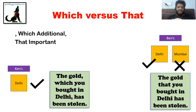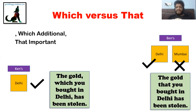If Ken has to tell his father about the situation, he does not need to mention the Delhi point because his father knows there is only one kind of gold. But if you want to include that redundant detail, you can use commas and 'which': 'The gold, which you bought in Delhi, has been stolen.' That Delhi part is additional — even if you remove it, 'the gold has been stolen' still makes complete sense.